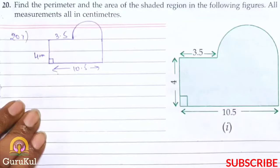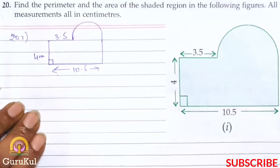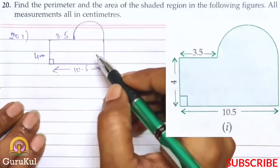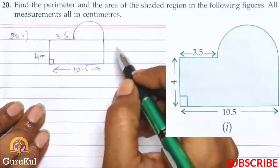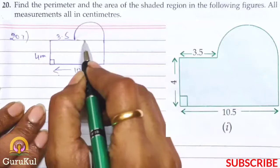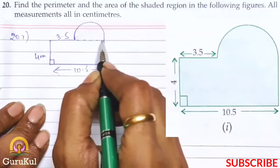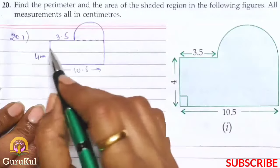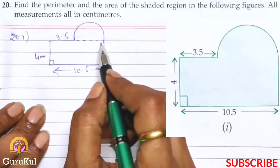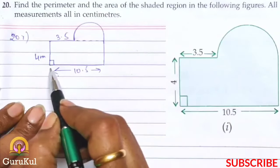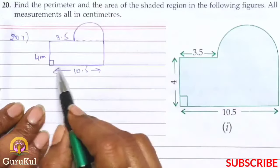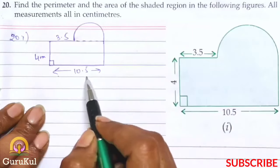Question number 20 first part - we have to find the perimeter as well as the area of the shaded region. As you can see on the screen, I have already sketched this figure and if we divide it from dotted lines, you can see this figure is the combination of a rectangle and a semicircle. This corner is mentioned as 90 degrees. The length is 4 cm and the longest side is 10.5.